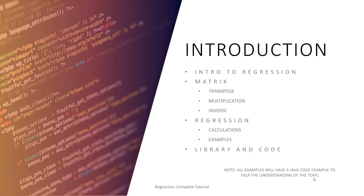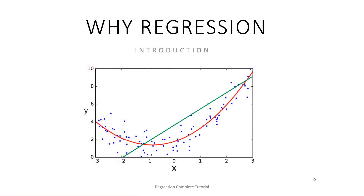All the examples will have Java code to help us understand the project. So, what is regression? A regression is like an approximation — with a lot of datasets we can create a function even though all the points are not included in the function. This helps us predict calculations and understand, for example, the economy or evolution systems.